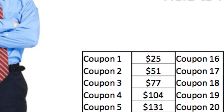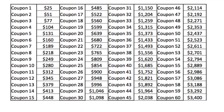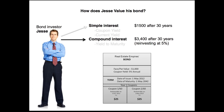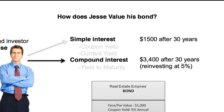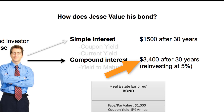With each coupon, we assume the previous running total compounds at 5%. So as we go through all 60 coupons, Jesse would actually have $3,400 at the end when he receives his last coupon payment. Comparing simple interest versus compound interest over the full 30-year duration: simple interest values the bond at $1,500, while compound interest — reinvested at 5% each coupon — totals $3,400. That's more than double the money on a bond, which is a pretty significant difference.